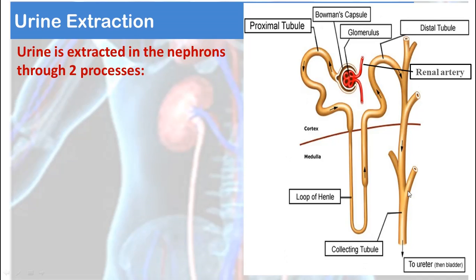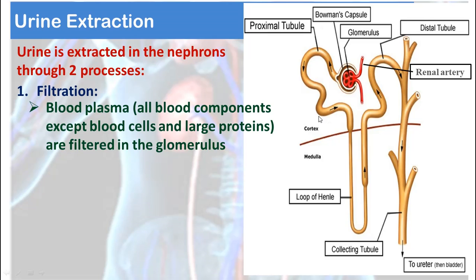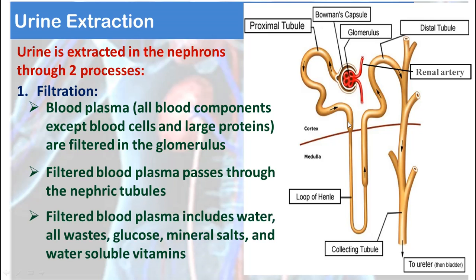Urine is extracted in the nephrons through two steps. The first step is filtration, through which all the plasma components — all blood components except blood cells and large proteins — are filtered into the glomerulus and enter through Bowman's capsule to the nephron. This filtered blood includes water, wastes, glucose, mineral salts, and water-soluble vitamins — all blood components except large molecules of proteins, blood platelets, RBCs, and WBCs.